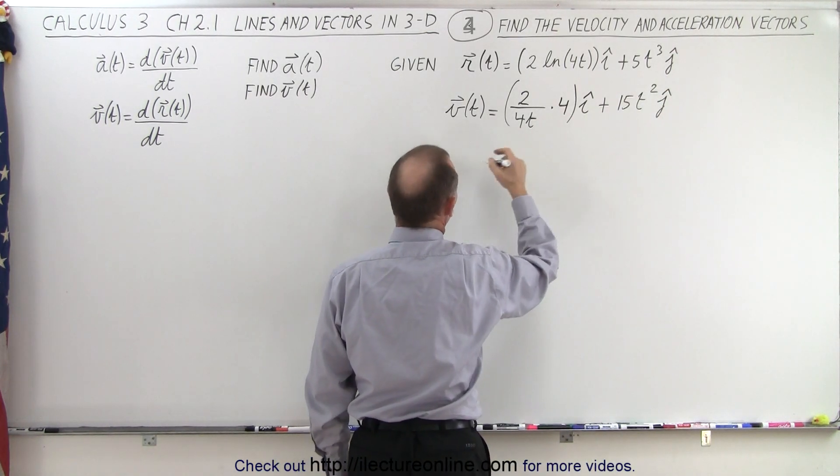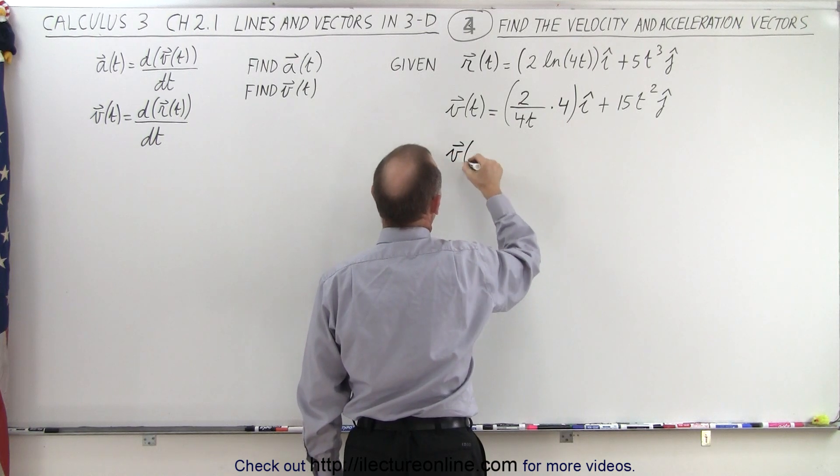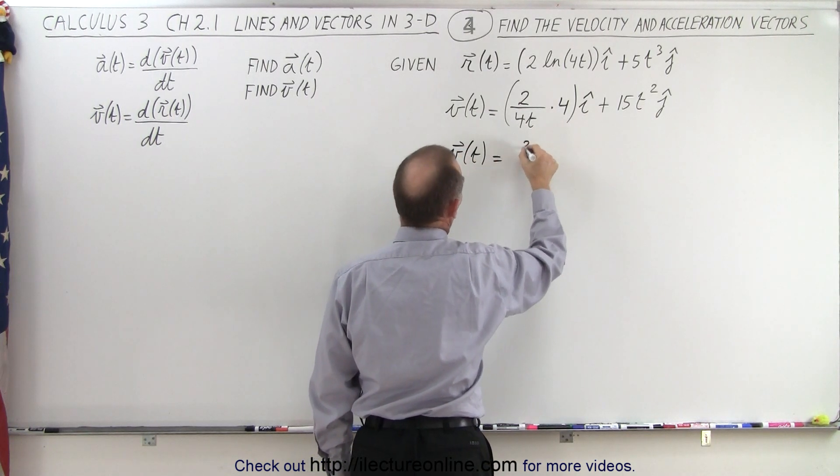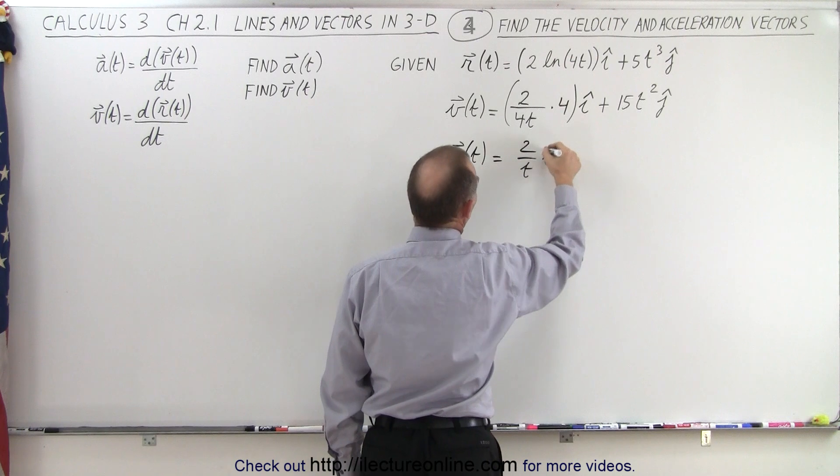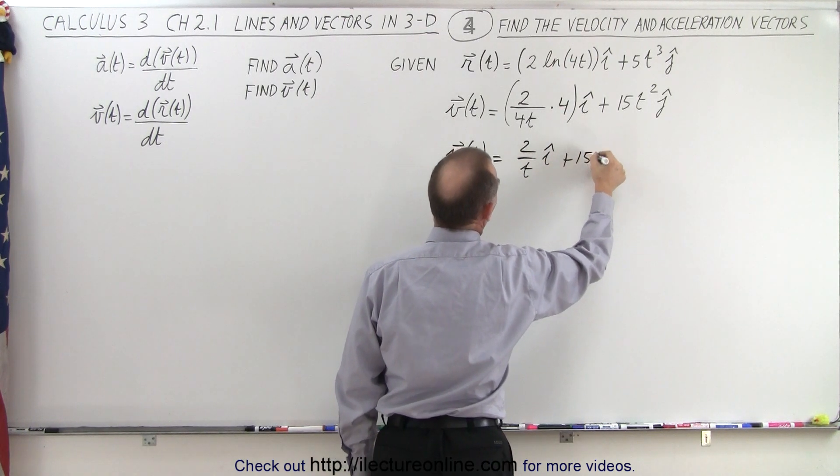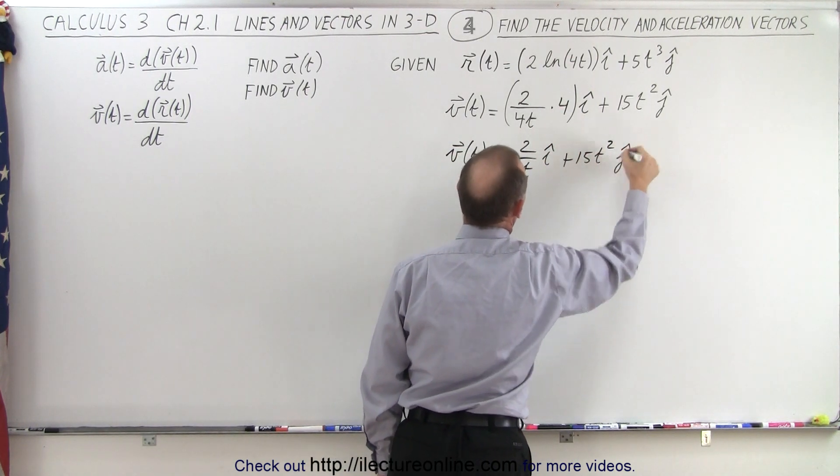So let's simplify this a little bit. The fours cancel out. So we have velocity as a function of time is therefore 2 over t in the i direction, plus 15t squared in the j direction.